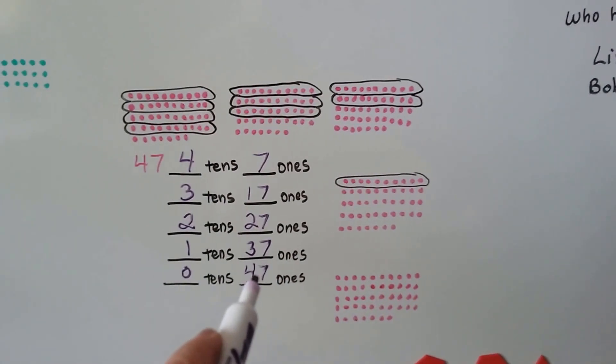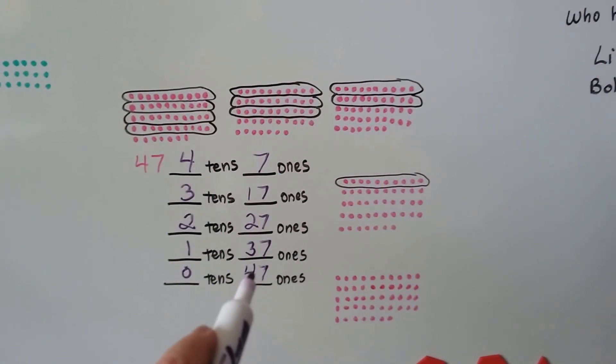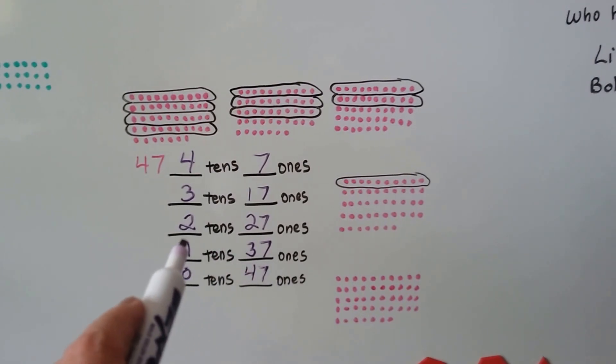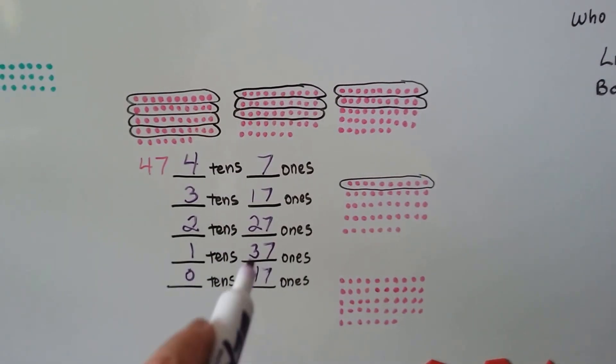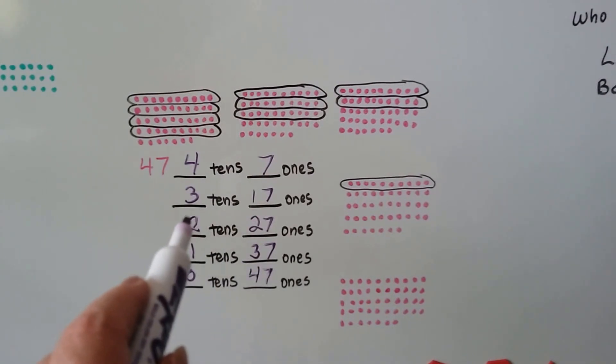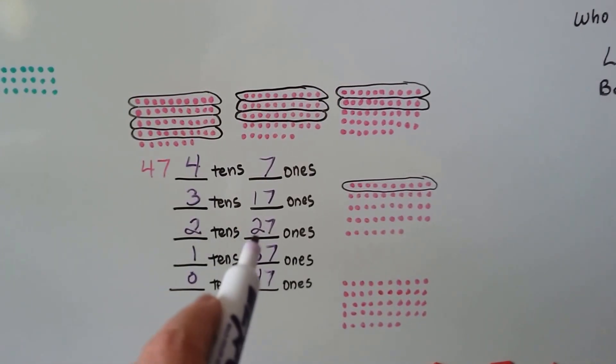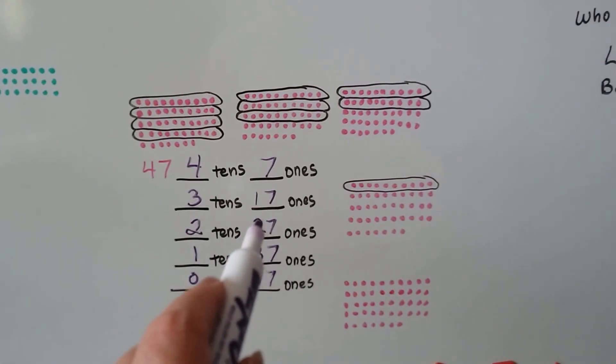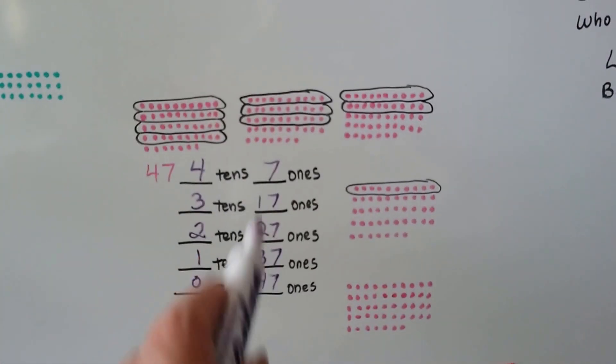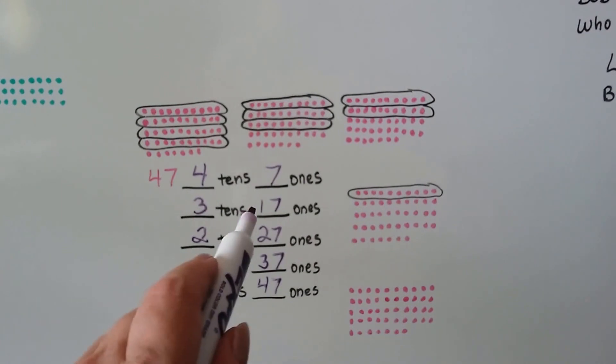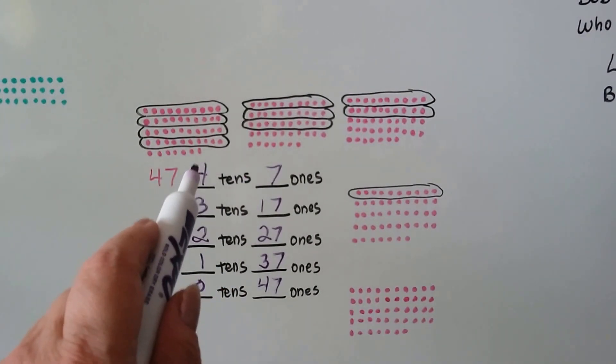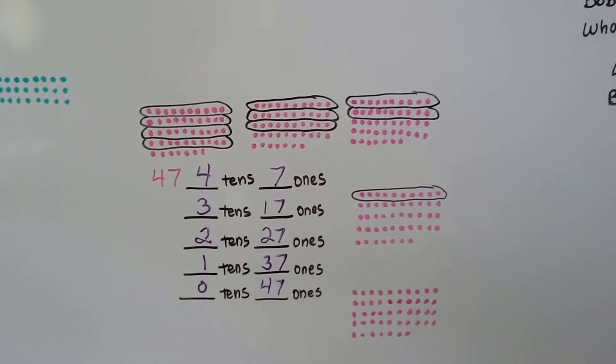When we have 47 ones, we can take a ten away and give it to the tens place, and then we'll have 37 ones. And we can take another ten away and give it to the tens place, and we'll have 2 tens and 27 ones. And we can still take another ten out of that and make 3 tens and 17 ones. We can still take another ten and give it to the tens place and have 4 tens and 7 ones.